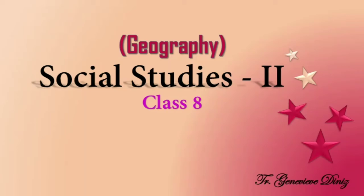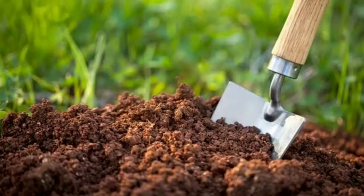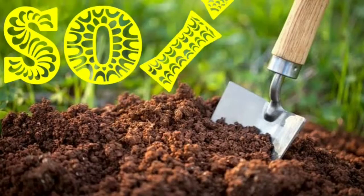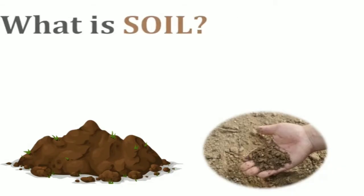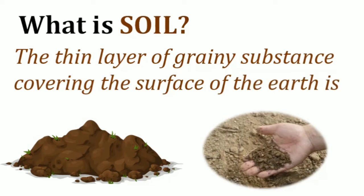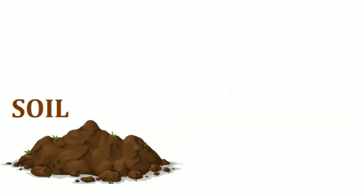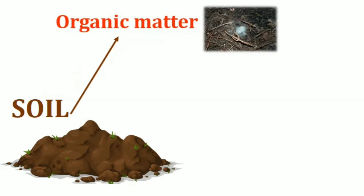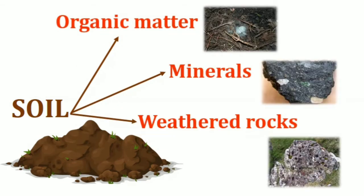Hello students. In today's video we shall learn about soil. The thin layer of grainy substance covering the surface of the earth is called soil. It is closely linked to land — landforms determine the type of soil. Soil is made up of organic matter, minerals, and weathered rocks found on the earth.